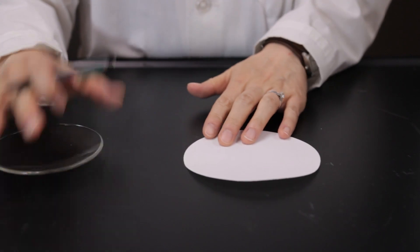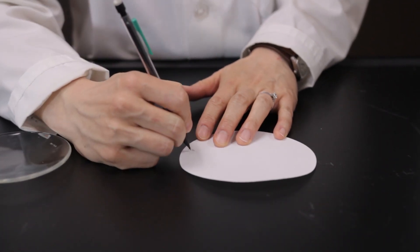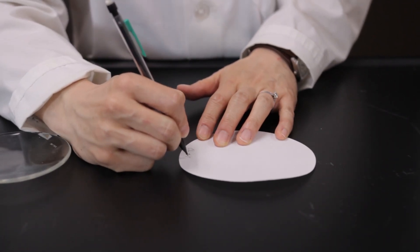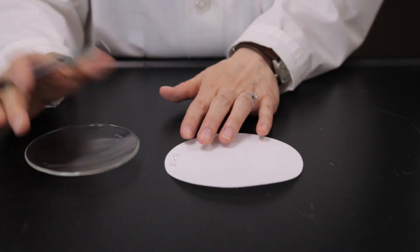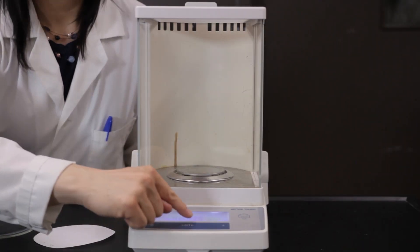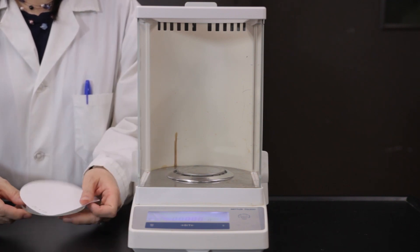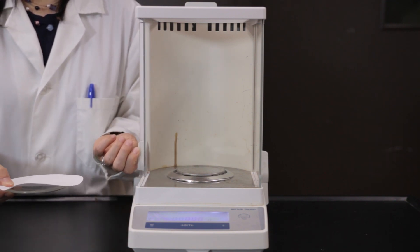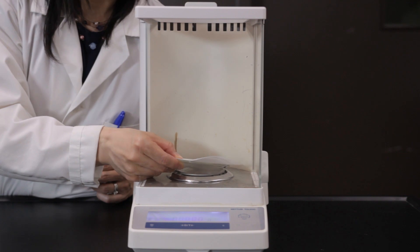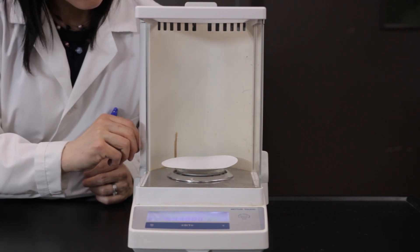Label a dry filter paper with your initials using a pencil along the edge. Place the filter paper on a watch glass and weigh them. Record the exact mass.